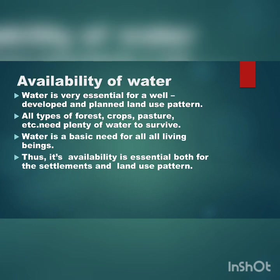Next is availability of water. As you all know, all living organisms need water. Water is essential for a well-developed land use pattern. All types of forests, crops, pasture, etc. need plenty of water to survive. Water is a basic need for all living beings; thus its availability is essential for both settlements and the land use pattern.